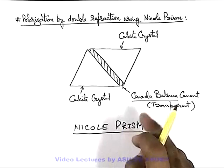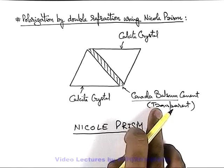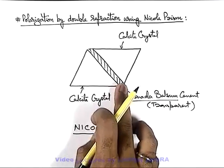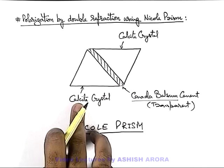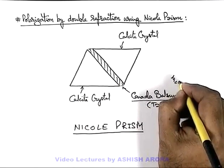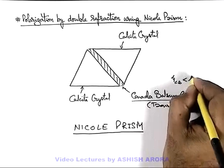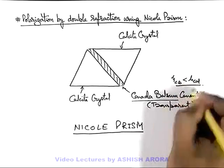This Canada balsam cement has a refractive index — the mu of Canada balsam is less than the mu of the calcite crystal.